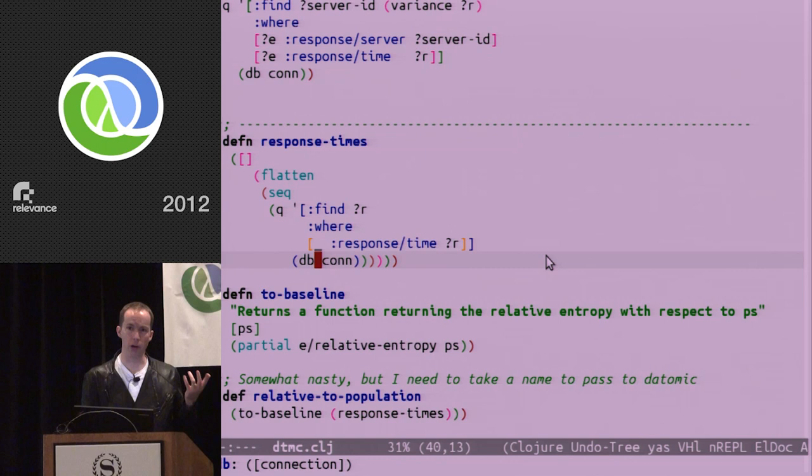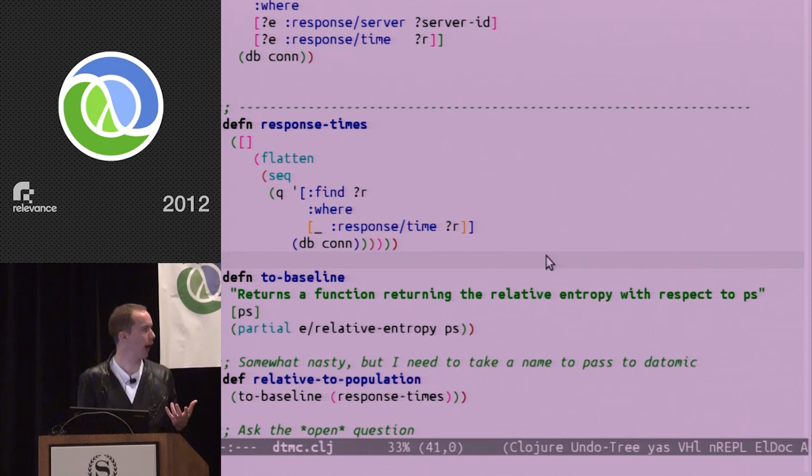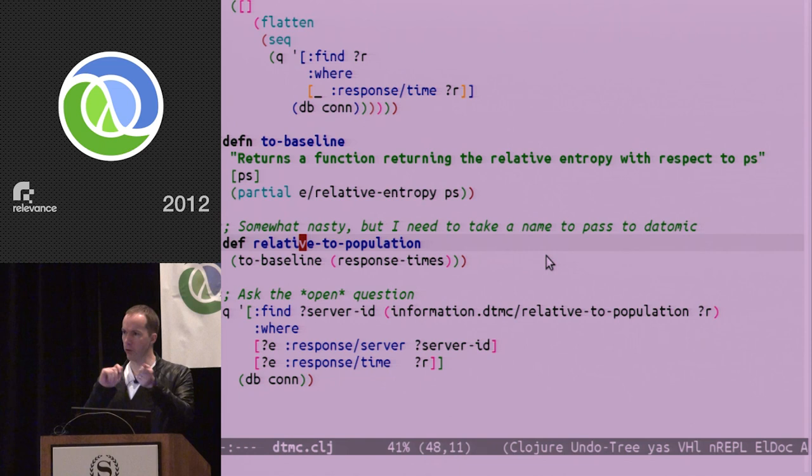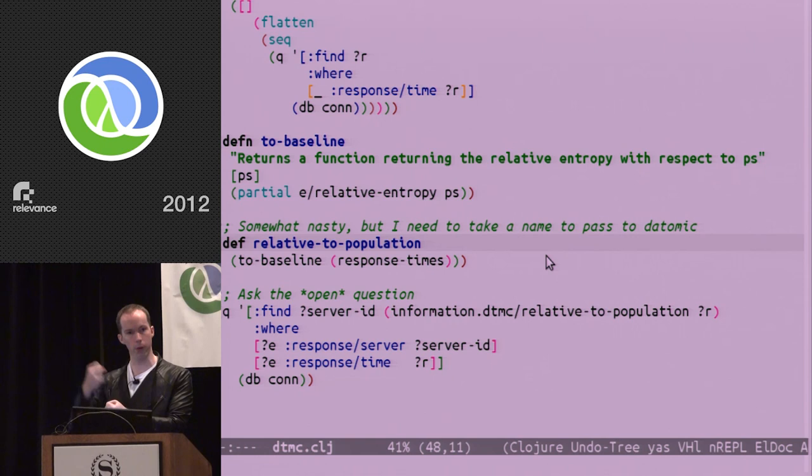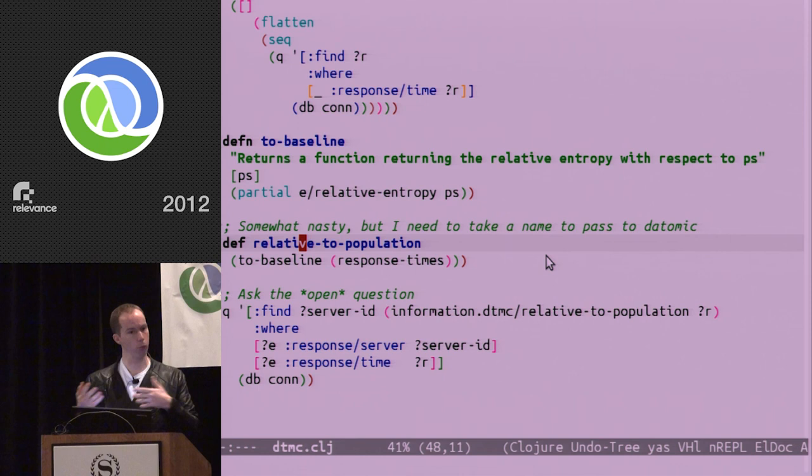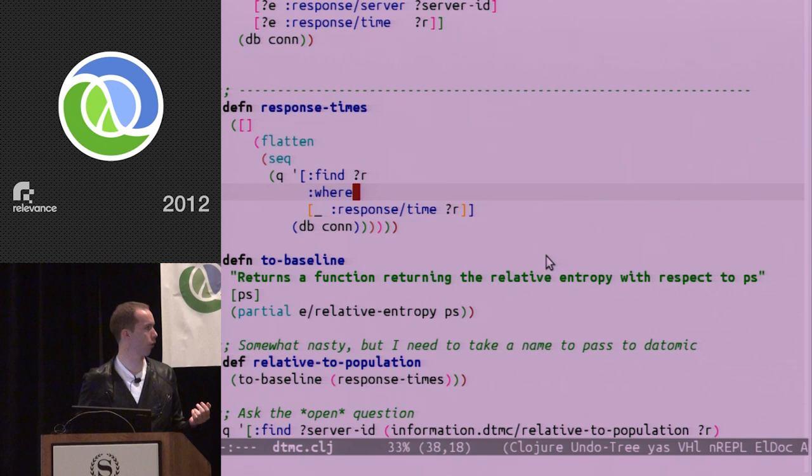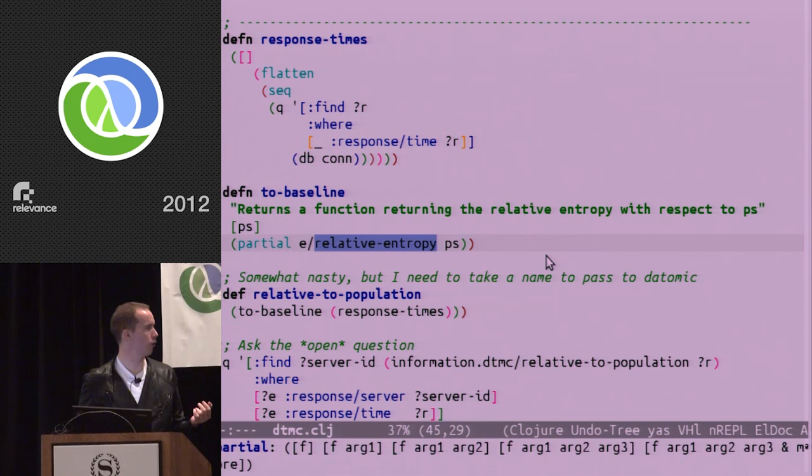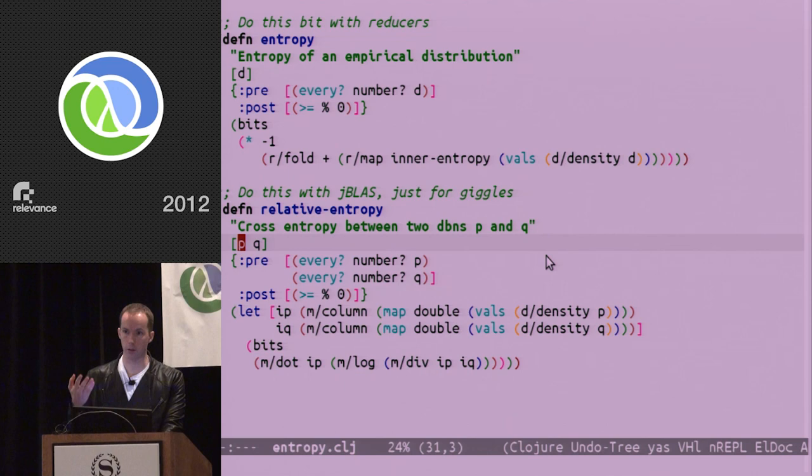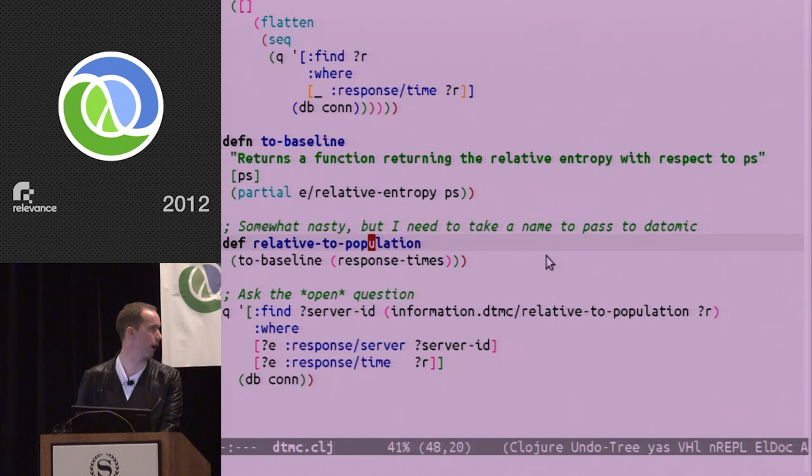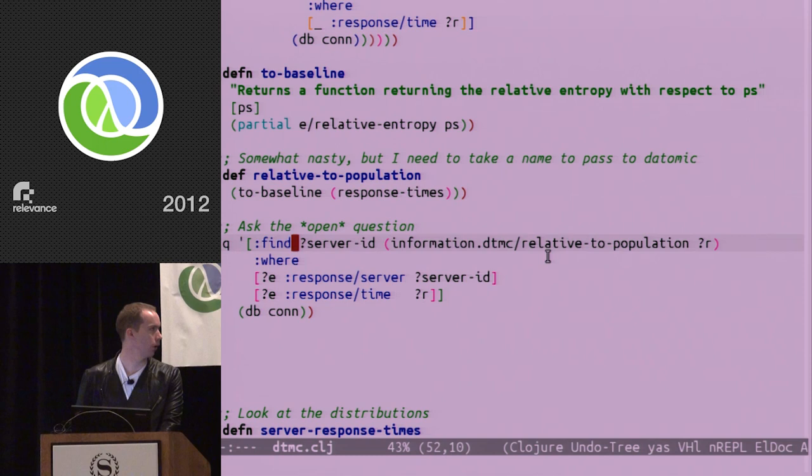So the point here is I'm asking a closed question. I'm asking something very specific about these distributions. Are the means different or are the variances different? This is highly specific. I'm assuming things about these distributions. If I ask relative entropy, that's a much more open question to ask because it doesn't assume anything about this stuff. So how would I do that? I'm going to take relative entropy to the population. So I'm comparing two distributions. P is my population. If I take all the responses that I've got in my database and then compare the responses from each individual server, I measure the relative entropy between the two of them. Here's the Datomic query that gets all of the response times. And then I partially apply that to relative entropy. Relative entropy is a function with two arguments and two distributions. P is my distribution over the response times of all the servers. So I've bound that in.